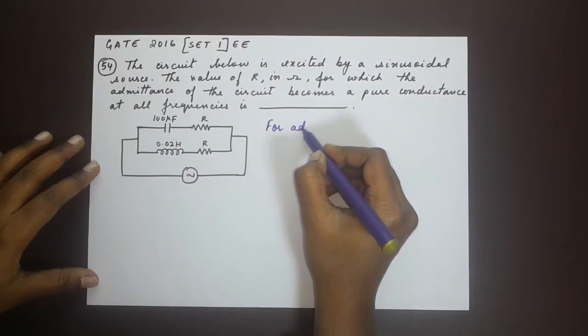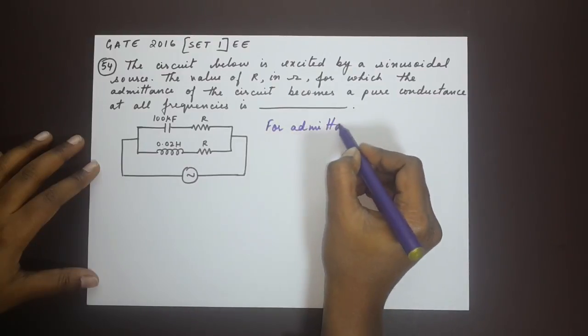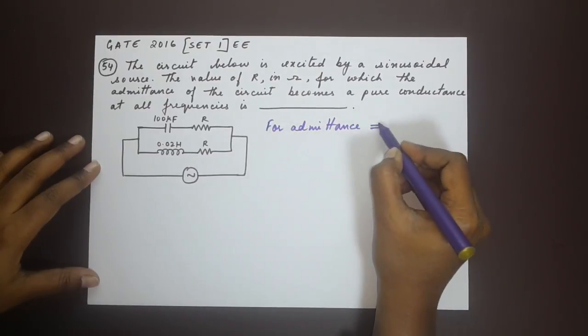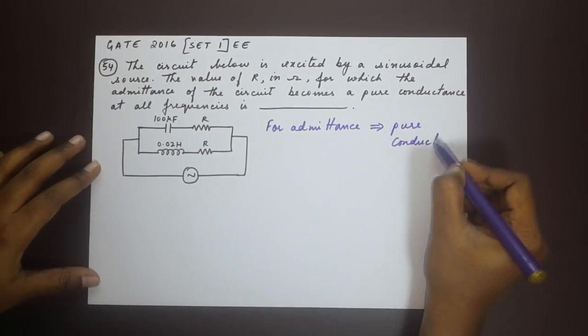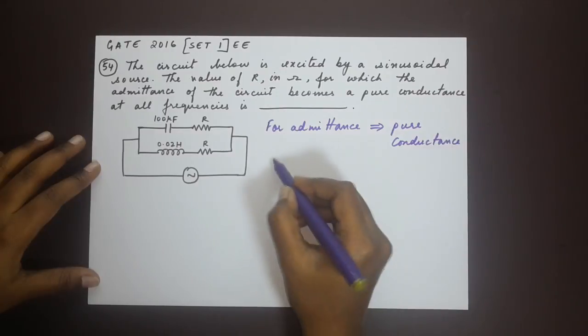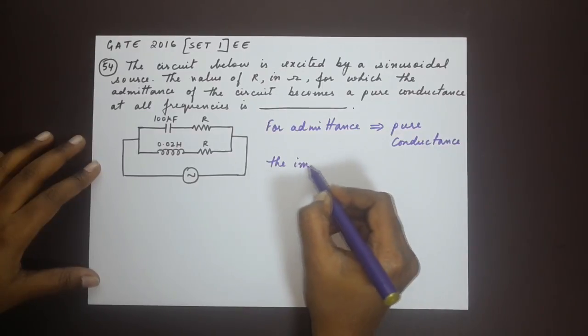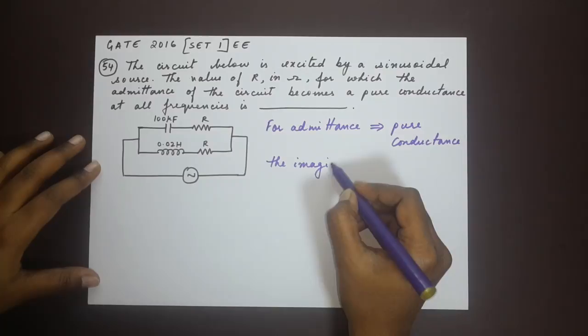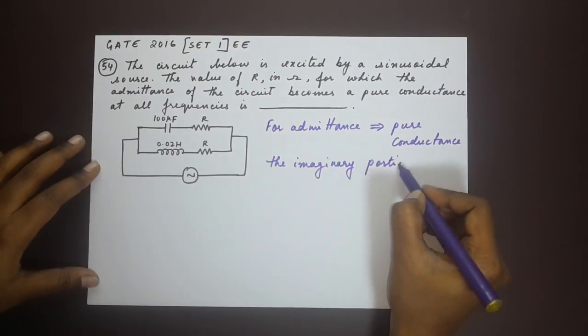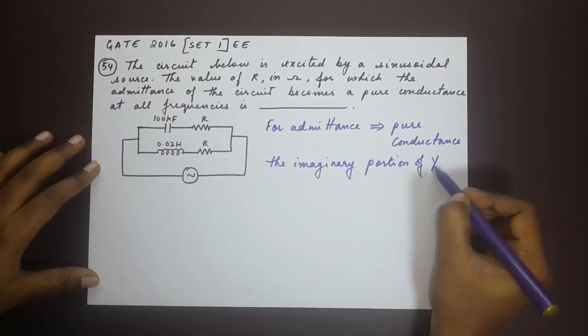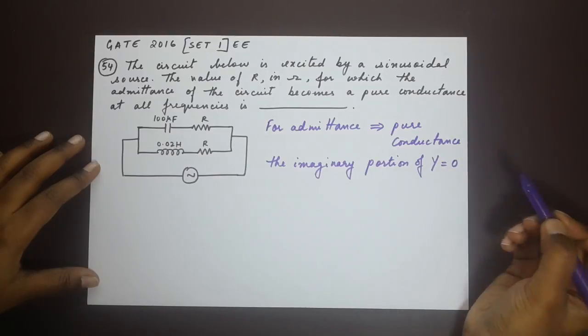For admittance to become pure conductance, the imaginary portion of y should be equal to zero.